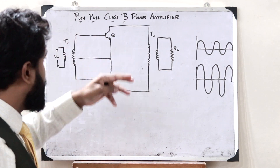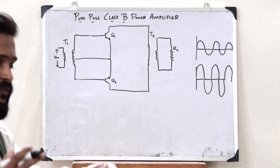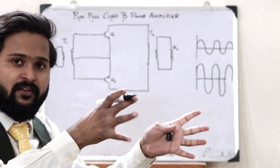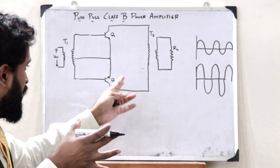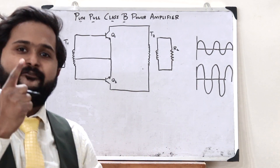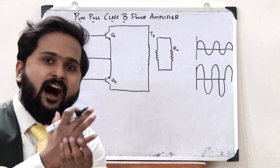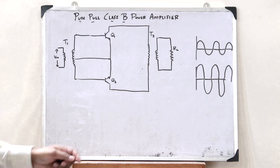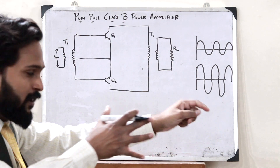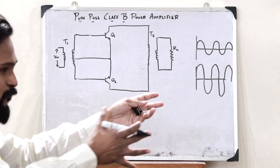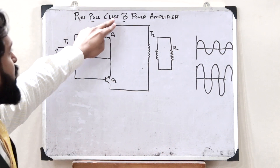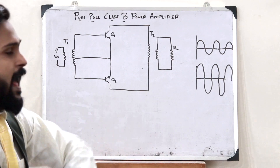The name push-pull is given because one transistor is pushed into conduction whereas the other transistor is pulled out of conduction for every half of the input. For the first half, this transistor is pushed into conduction whereas the other is pulled out of conduction — and hence the name push-pull class B power amplifier.